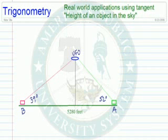In this video we're going to be using the tangent function in a real-world application of finding the height of an object in the sky that is sighted by two different objects.